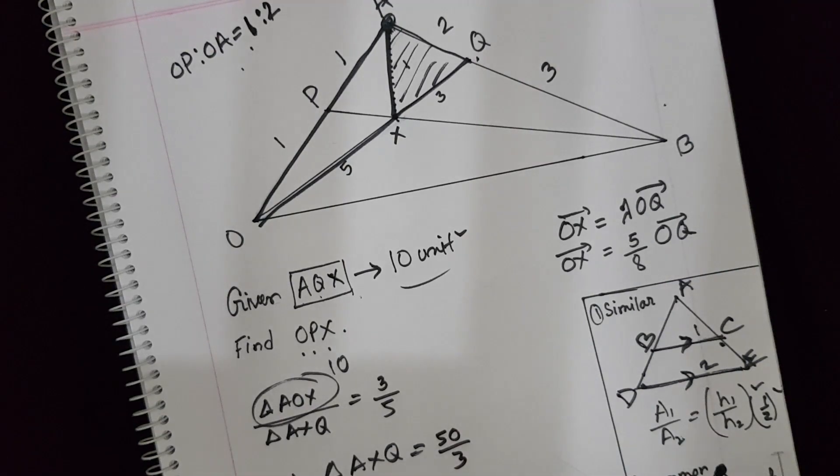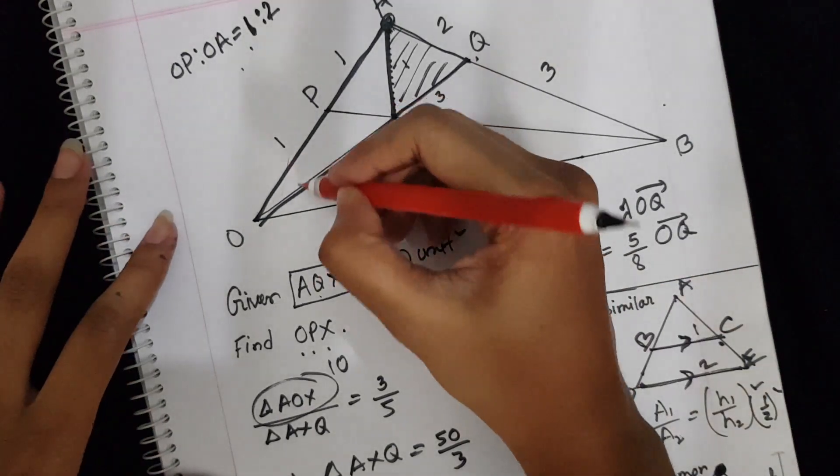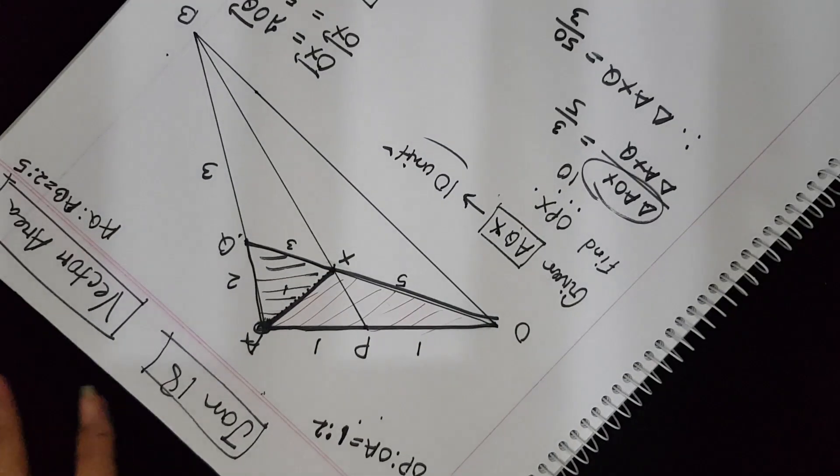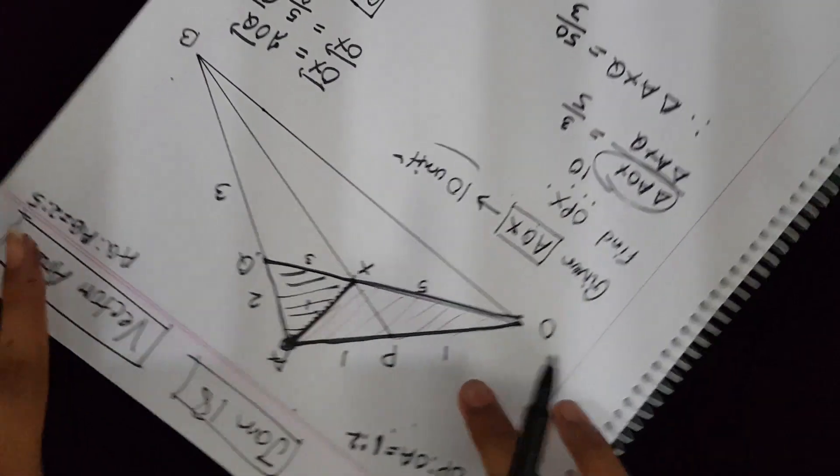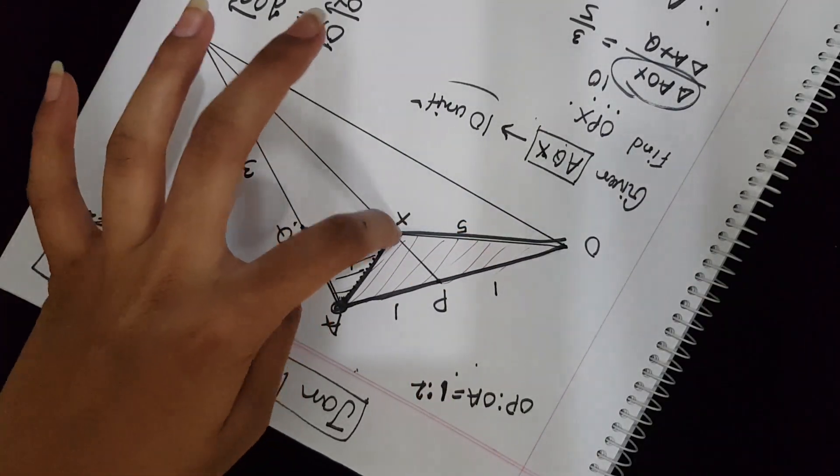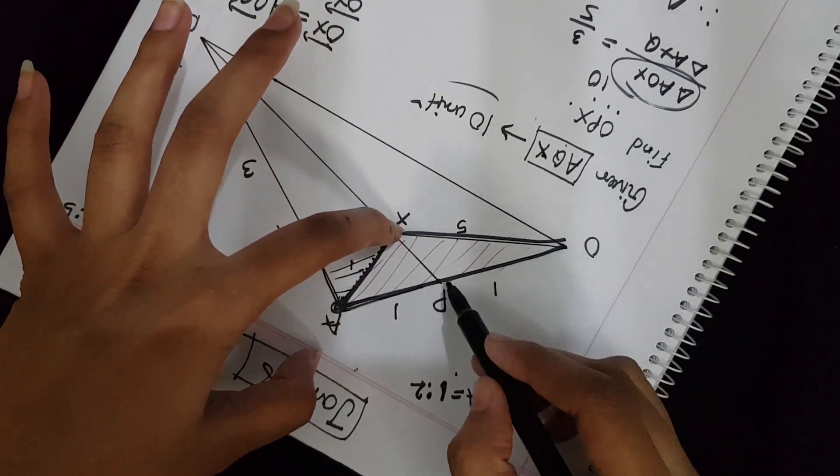So 50 by 3 is the area of this triangle AOX. So if I rotate the copy, now X is the common point and AP and OP are the base ratio.